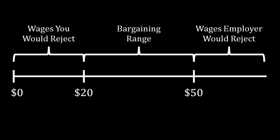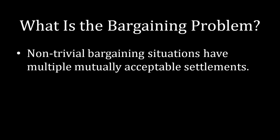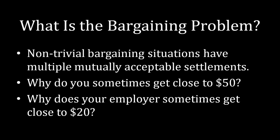That's because you and your employer need to negotiate where exactly you will fall between $20 and $50. This course is an analysis of the bargaining problem. These non-trivial bargaining situations have multiple mutually acceptable settlements, so the problem is figuring out exactly which settlement we land on. Why do you sometimes get closer to $50? Why does your employer sometimes get you closer to $20? These are the types of questions we're interested in answering.